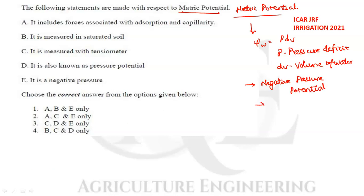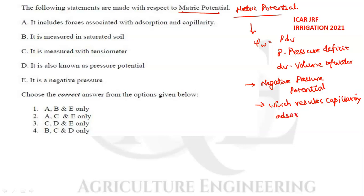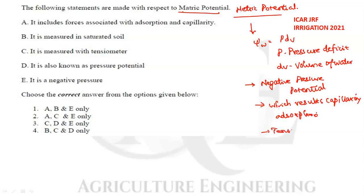Metric potential results from capillarity forces and adsorption. It can be measured with a tensiometer.